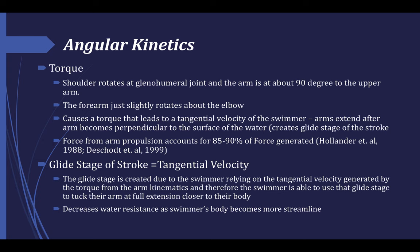Another biomechanical concept we want to focus on is angular kinetics, particularly torque and tangential velocity. As the arm moves during the downstroke phase, the shoulder rotates at the glenohumeral joint with the arm about 90 degrees to the upper arm, flexed at the elbow joint. As the elbow flexes to its 90 degrees in the downstroke phase and then extends back to around 170 degrees during the follow-through phase, torque is generated as the arm is rotated about an axis generated by the flexion of the elbow and internal rotation of the arm. This causes a propulsion force which accounts for 85–90% of the total propulsion force generated, according to Hollander et al. in 1988. The swimmer utilizes the tangential velocity generated by the torques to propel themselves forward, where they can transition into the glide phase of the stroke.